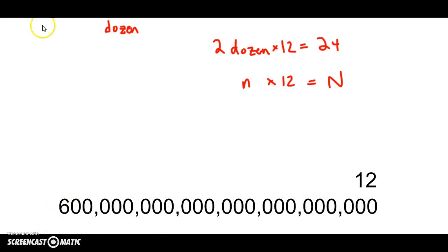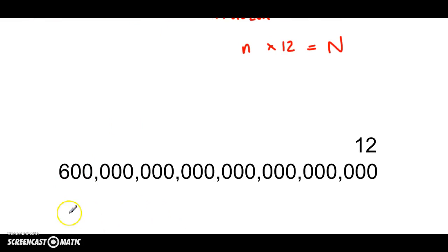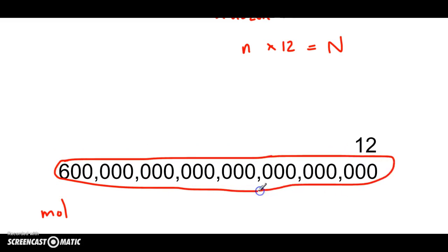So instead, we don't use dozens to count that many donuts. We use something called moles. And in fact, this number is 1 mole.